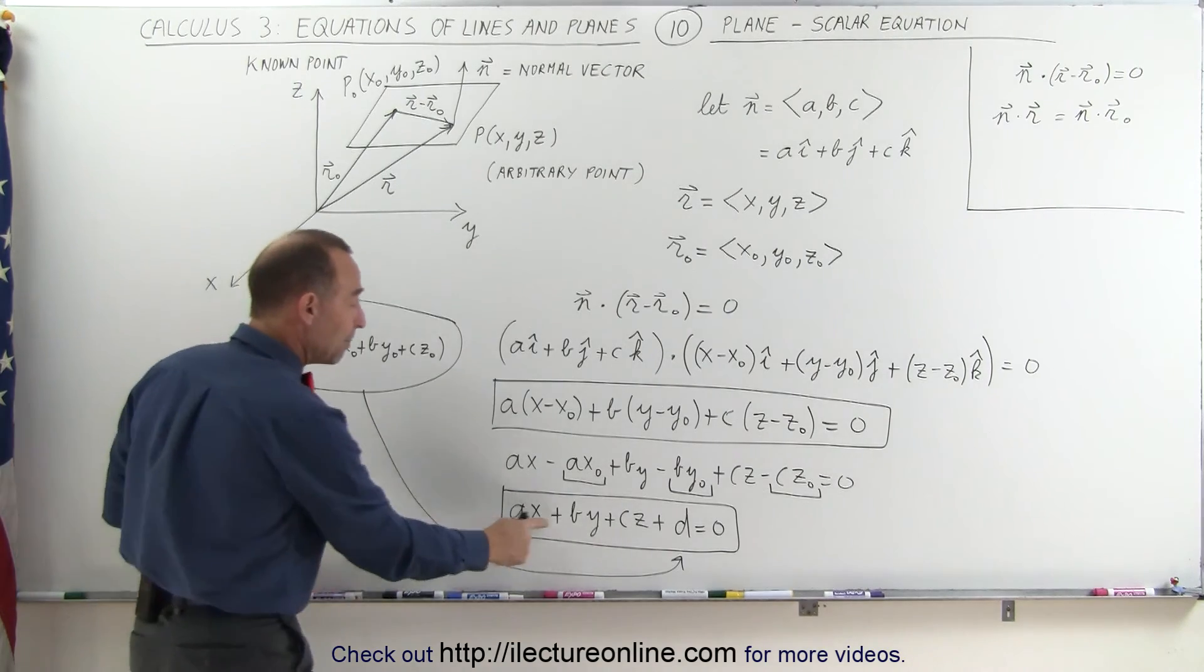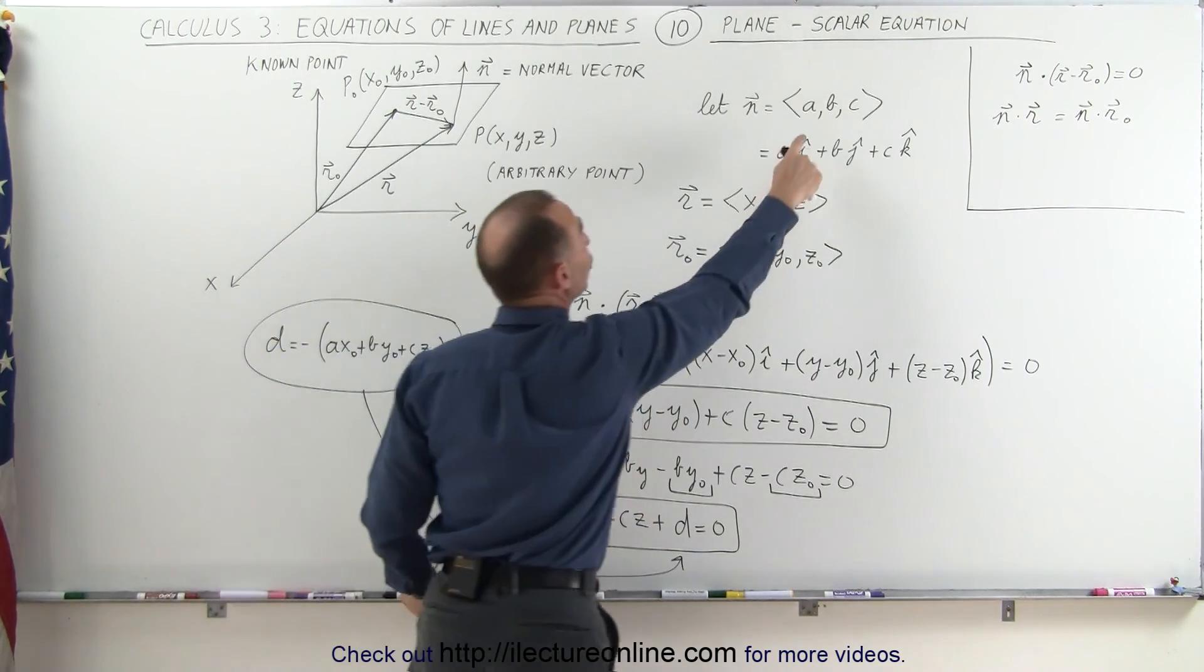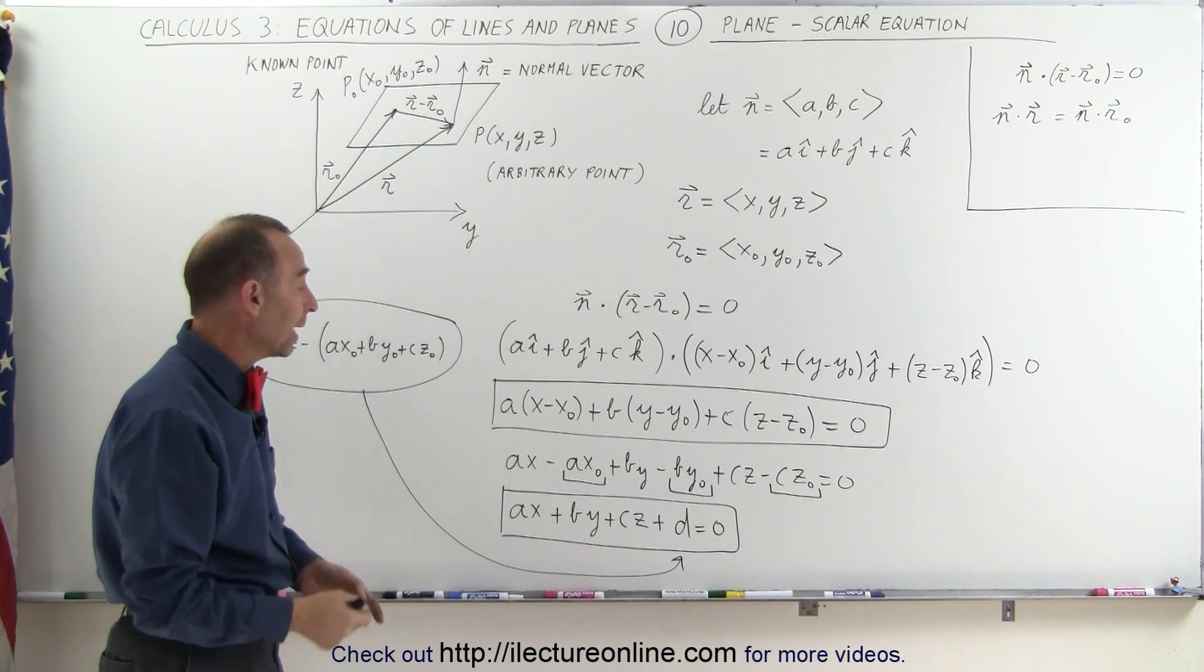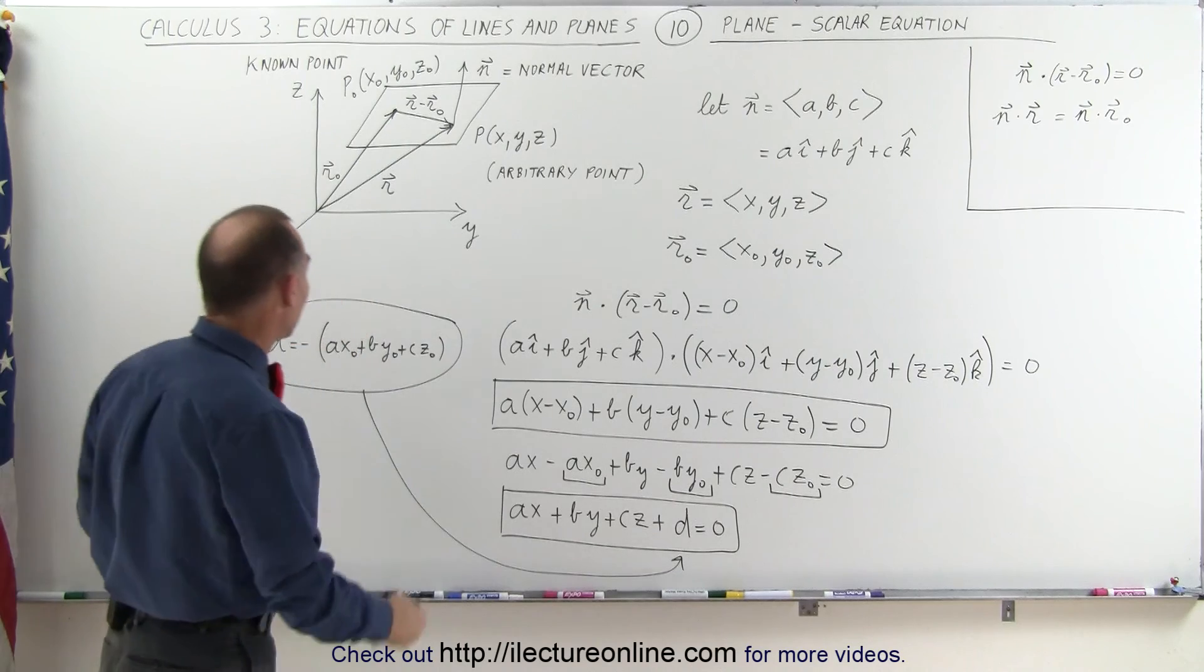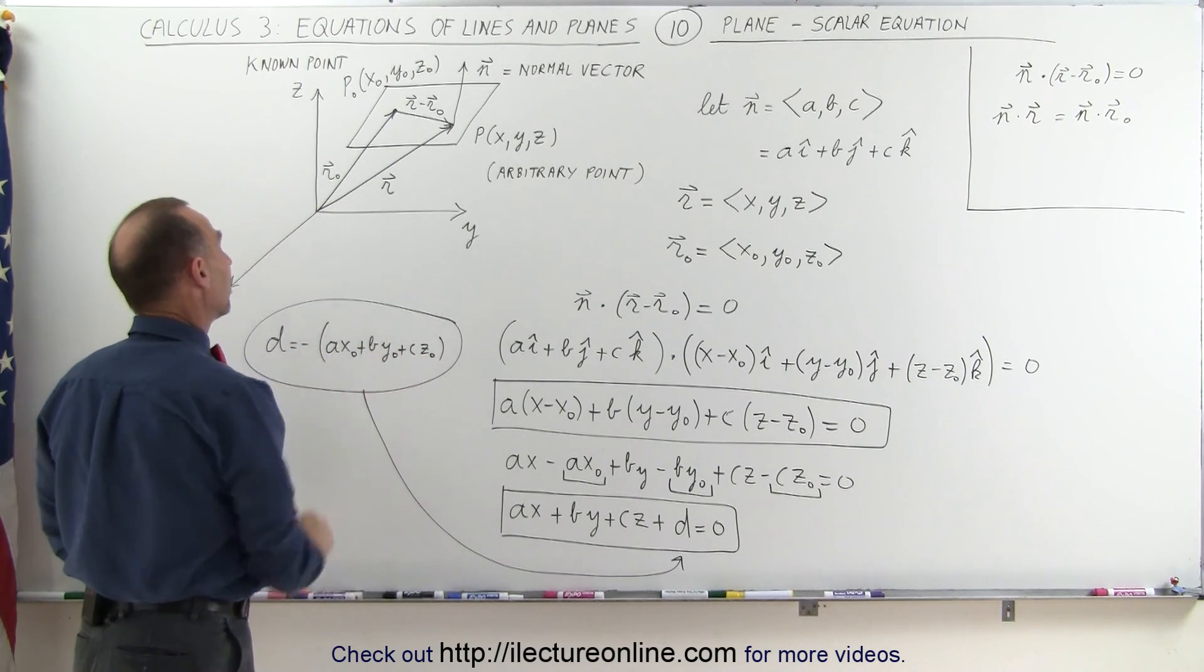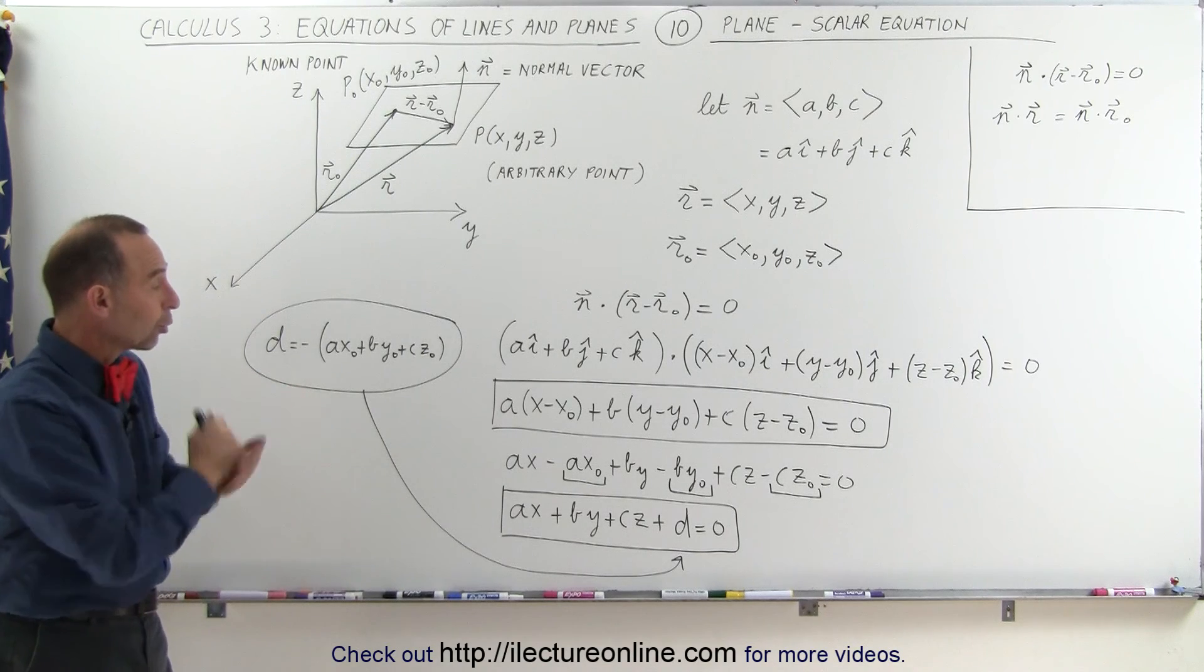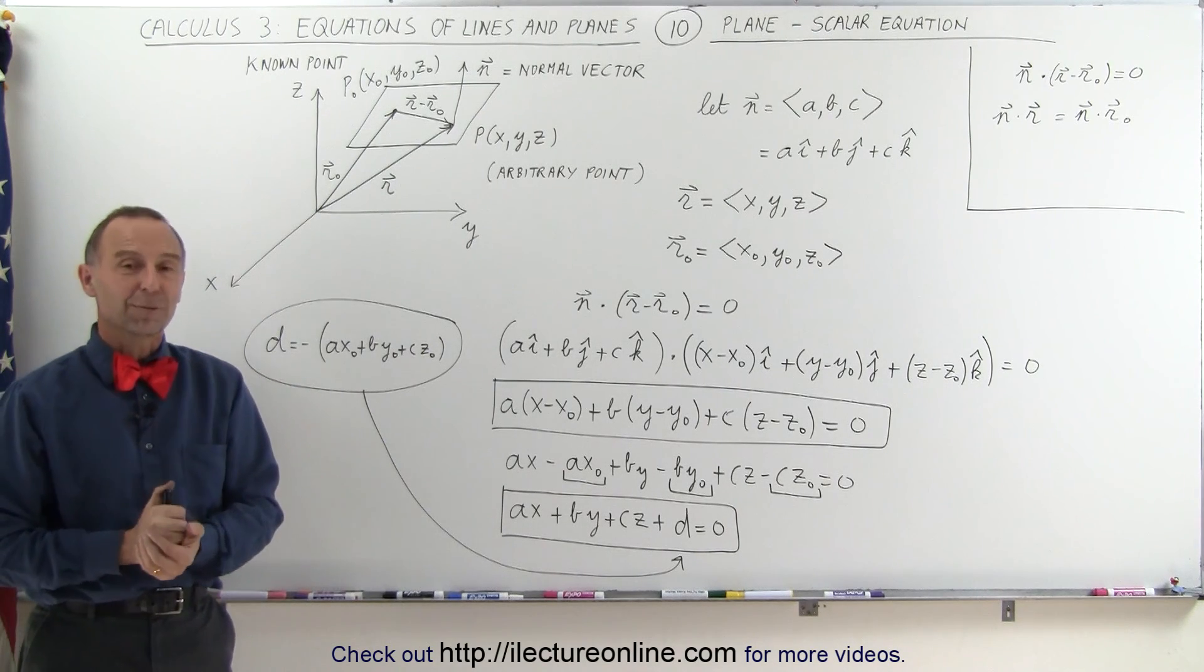Notice that a, b, and c come from the normal vector. x, y, and z are simply arbitrary location of any point on the plane. And d is determined by knowing a known point on the plane like this. And that's how we write a scalar equation of a plane in three-dimensional space.